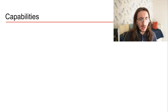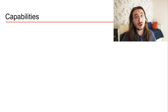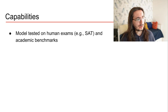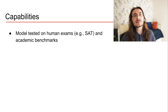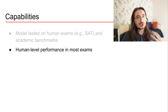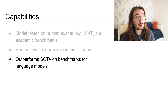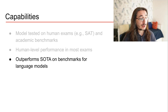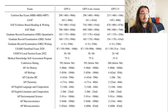One part of the technical report that is very detailed is the evaluation of the model. We know quite a lot about the capabilities of GPT-4 through this evaluation. The model was tested on human exams like the SAT and a bunch of others, but also on academic benchmarks for large language models. Overall, GPT-4 has human-level performance in most human exams and tends to outperform state-of-the-art models on benchmarks for language models. Here we have a table with a list of many of the human exams that GPT-4 took.